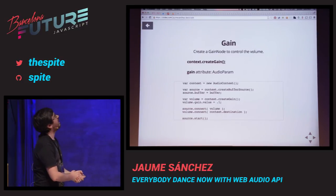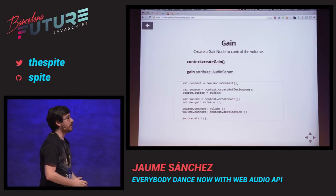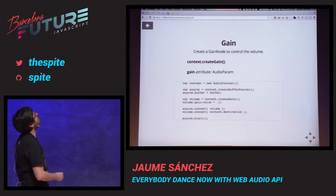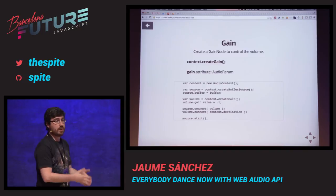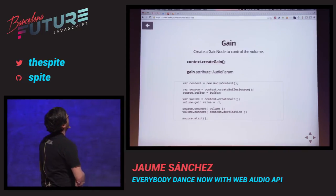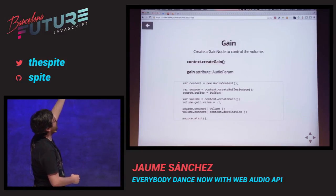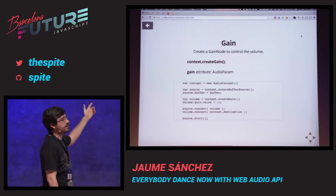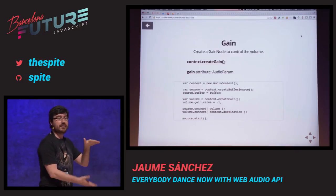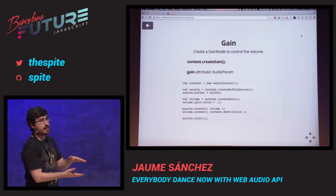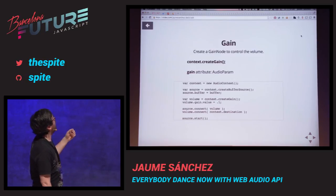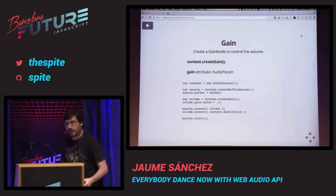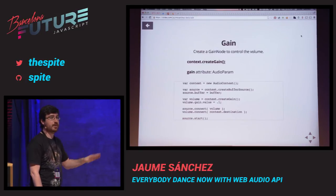The gain node is basically a gain control node — essentially the volume, although in audio, gain, volume, and power are different concepts. It has one attribute which is gain, and it's also an AudioParam, so you can schedule it. Create the context, create the buffer source, create a volume node, assign the value to 0.1 — that's the scaling factor applied to your wave. 1 would be no modification, 2 would be twice as loud. Connect the source to the volume and the volume to the destination and play it. If you keep the reference to your volume node, you can change it any way you want.